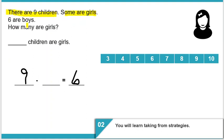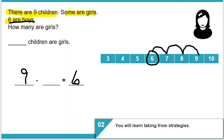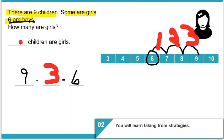There are nine children. Some are girls, six are boys. How many are girls? We start at our six, representing the six boys, and count on to nine: six, seven, eight, nine — that's one, two, three. So nine minus three equals six, meaning three children are girls.